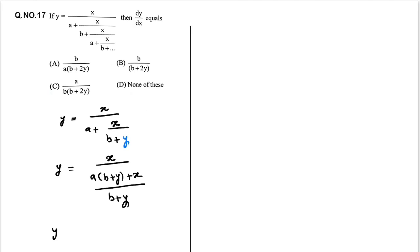Then y equals x(b plus y) and denominator we are able to write ab plus ay plus x, which is equal to now y(ab plus ay plus x) equals x(b plus xy). So if you multiply y.